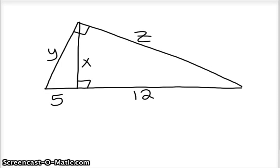Okay, so here's a video on geometric mean. We want to find, we've got this triangle with an altitude drawn in, a right triangle with an altitude, and we want to find the values of y, x, and z where the length here is 5, and the other length is 12, so you've got 17 across the bottom.